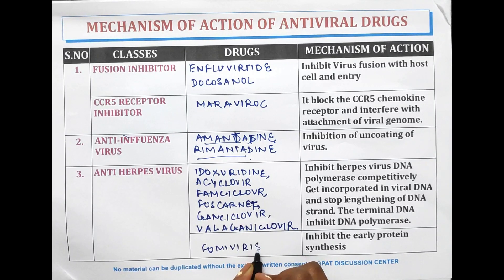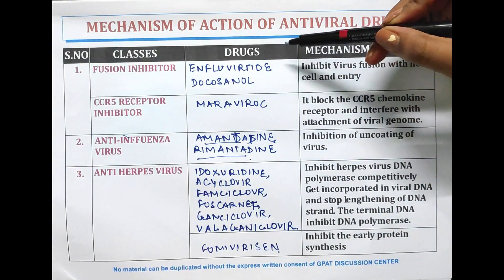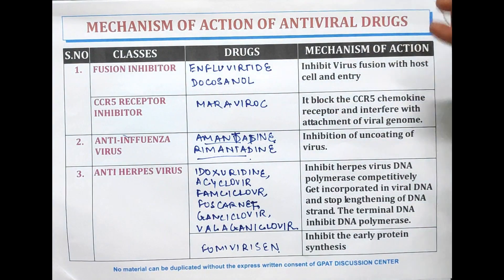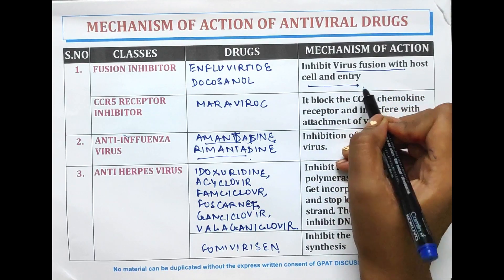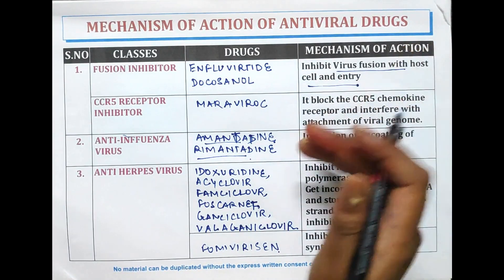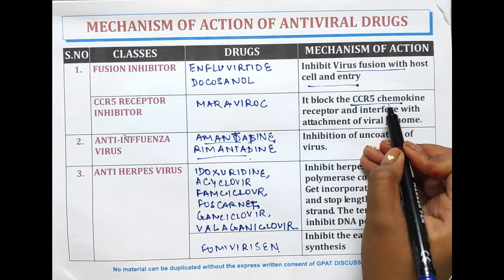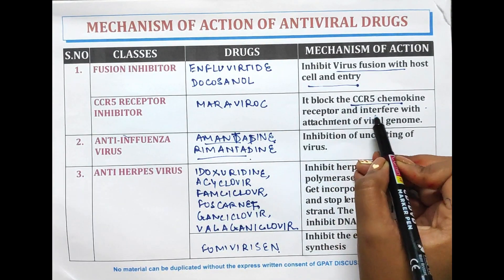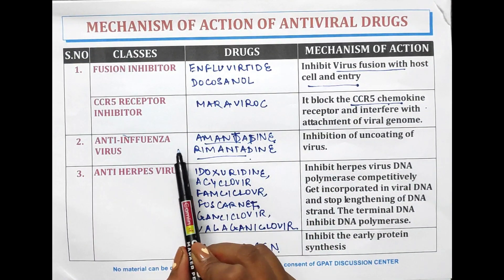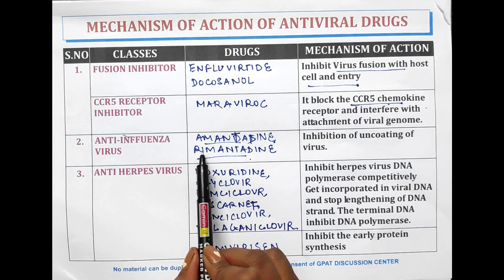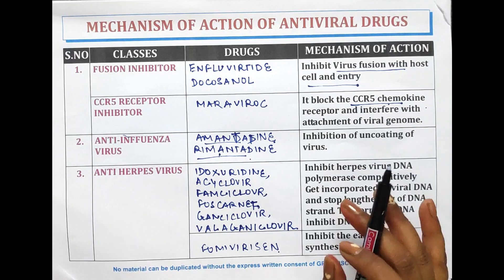The mechanism of action: enfuvirtide and docosanol inhibit the viral fusion with host cell and entry. Maraviroc blocks the CCR5 chemokine receptor and interferes with the attachment of the viral genome. Anti-influenza drugs rimantadine and amantadine inhibit the uncoating of virus.